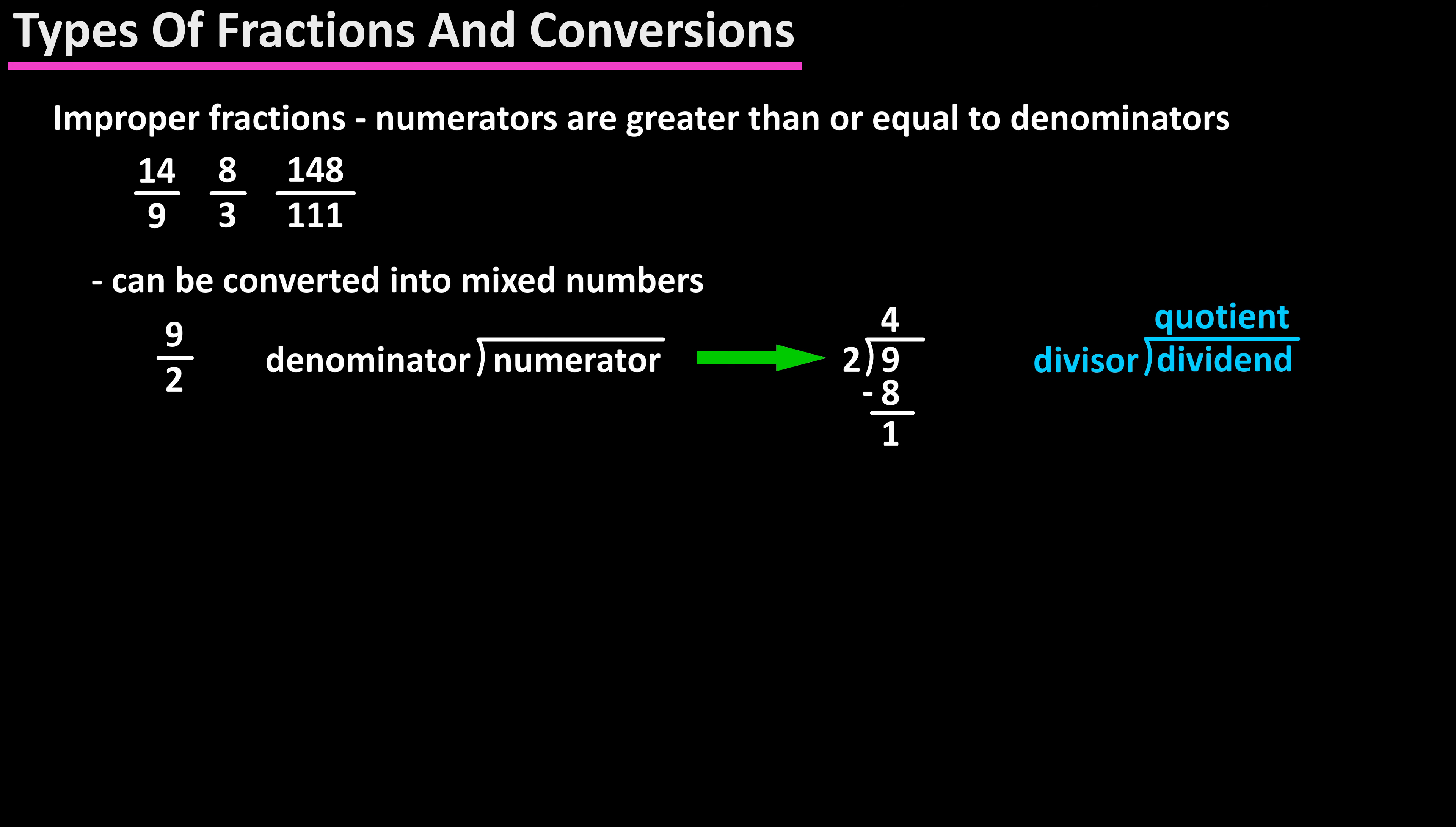The quotient at the top is the whole number part of the mixed number. The original denominator of 2 remains in the denominator, and the remainder of the division, 1, is the numerator in the mixed number. Here are a couple more examples of converting improper fractions to mixed numbers.